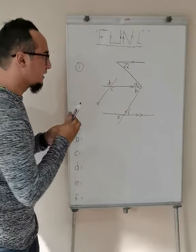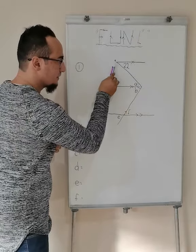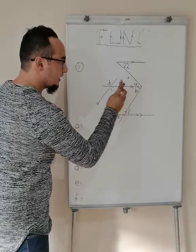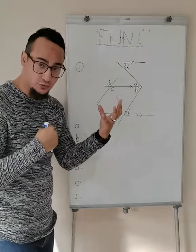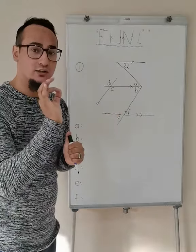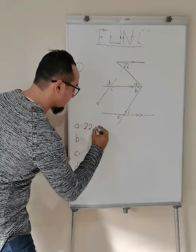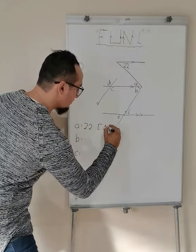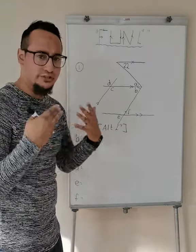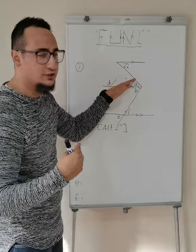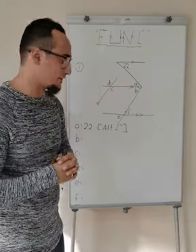First let's look at A. Because those two lines are parallel, that's my transversal, meaning A would be exactly the same as 22 degrees. Why? Because of alternate angles. So A is equal to 22 degrees — alternate angles. If you have your question paper, make sure that you write 22 in your diagram so that you know what's going on.